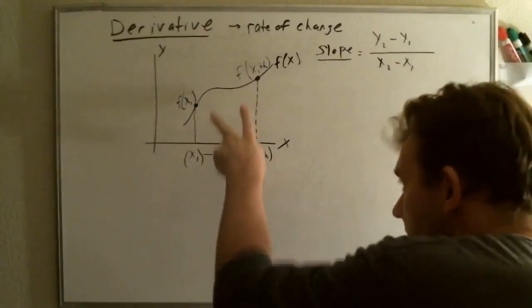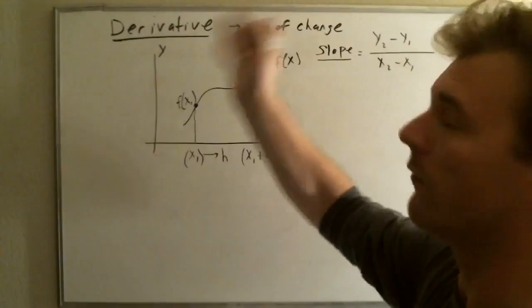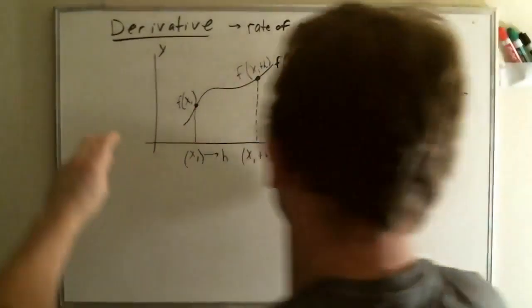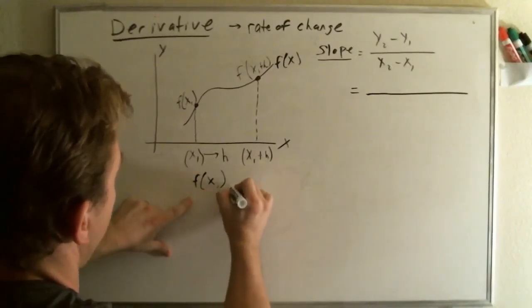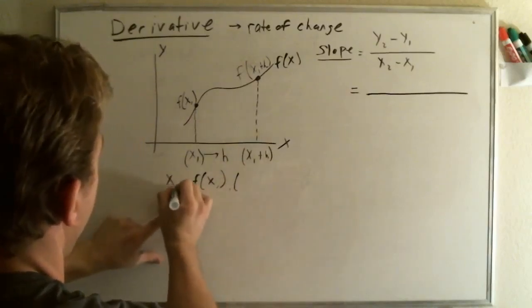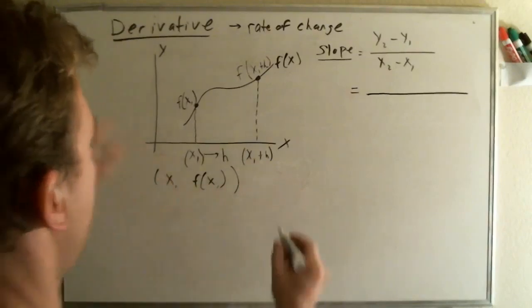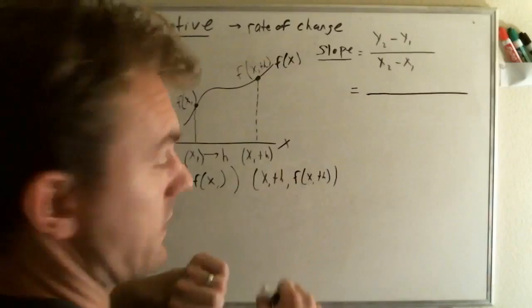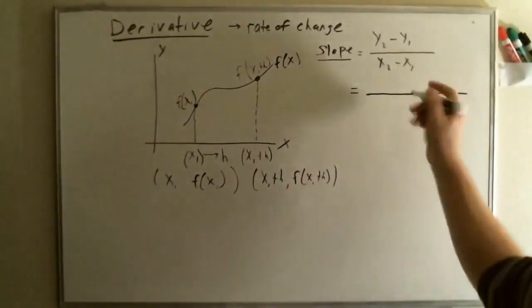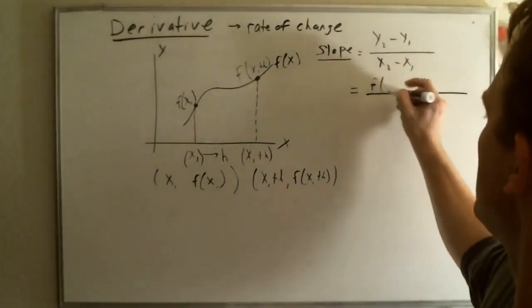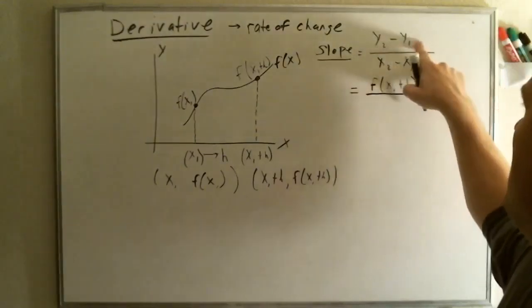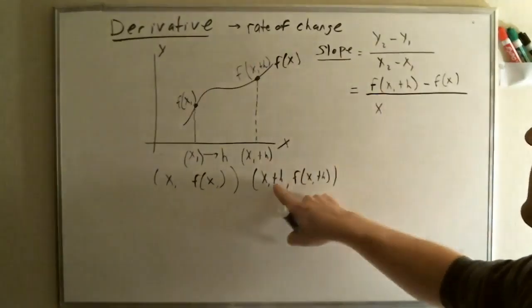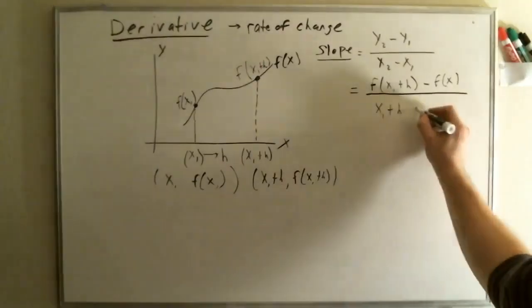If we take these two points and use this slope formula, we can come up with a rate of change, which is known as the derivative. So, let's say that we have two points here, and these two points are x1, f of x1. And we have this point here, x1 plus h, and we have f of x1 plus h. We're going to take these two points and put them into here. Y2 is x1 plus h minus y1. And then, we're going to say x2, which is x1 plus h minus x1.